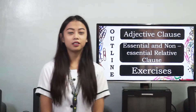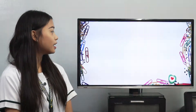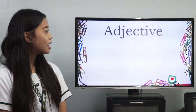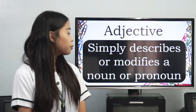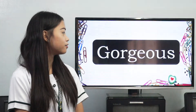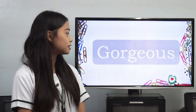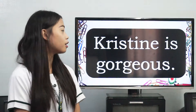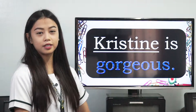To start the discussion, let us first define what an adjective is. An adjective simply describes or modifies a noun or pronoun. Let's use an example of an adjective — the word gorgeous. Let's use gorgeous in a sentence: Christine is gorgeous. This is an example of how the adjective gorgeous describes or modifies the noun Christine.